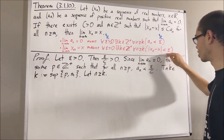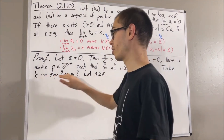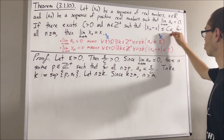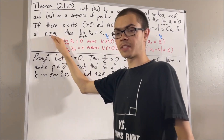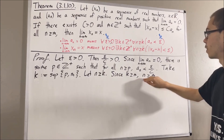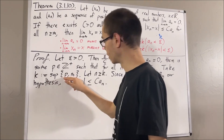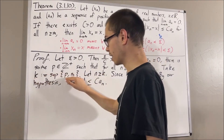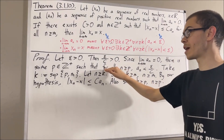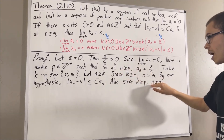From here, we want to show that the absolute value of xn minus x is less than epsilon. To start, we know that k is greater than or equal to m. And since n is greater than or equal to k, and k is greater than or equal to m, that tells us that n is greater than or equal to m. Since the inequality holds for all positive integers greater than or equal to m, it must hold for n. So the absolute value of xn minus x is less than or equal to c·an. Also, we know that k is greater than or equal to p. And since n is greater than or equal to k, and k is greater than or equal to p, that tells us n is greater than or equal to p. So we can apply our earlier result: an is less than epsilon over c.